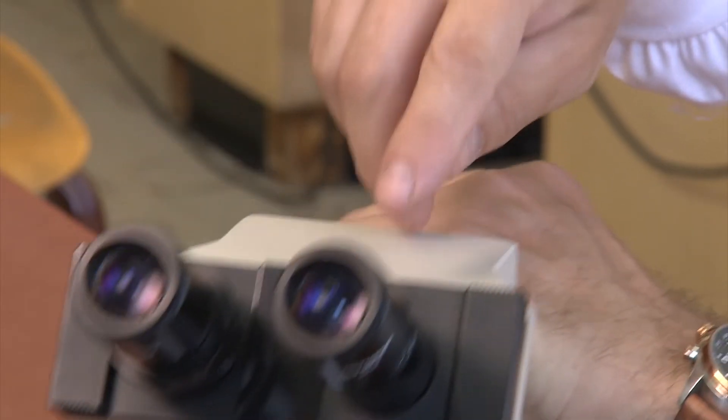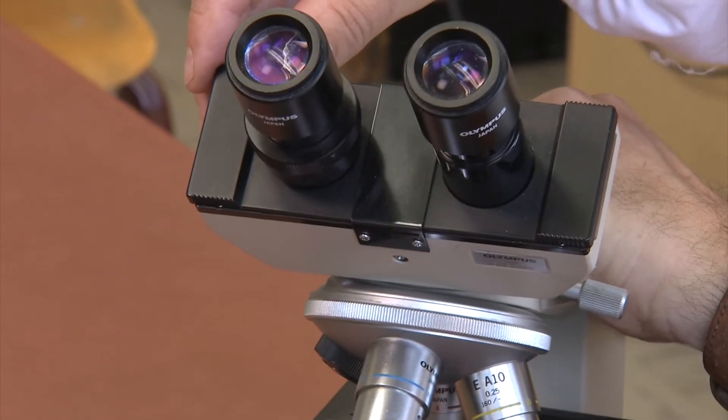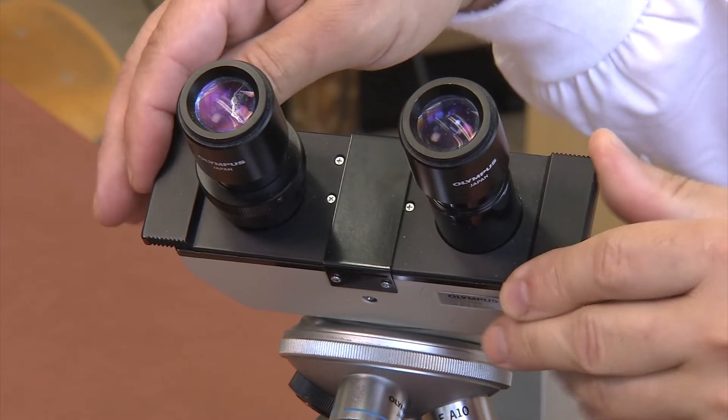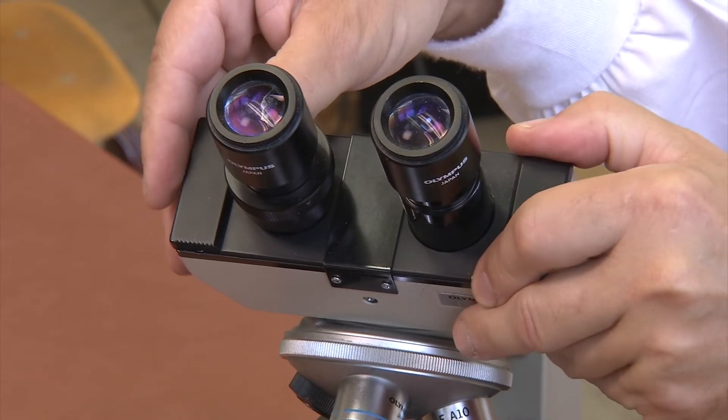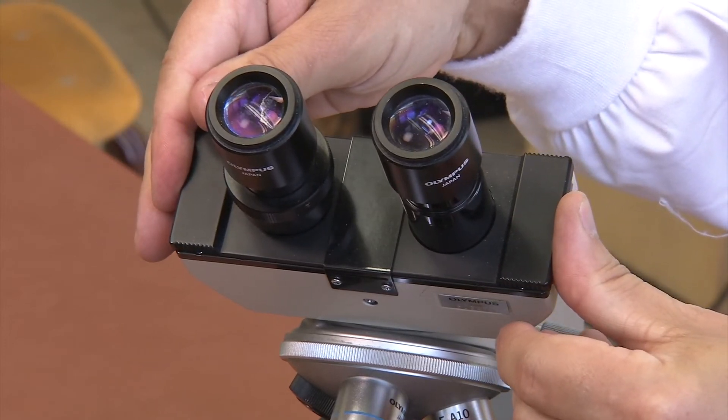Between the base of the oculars is the interpupillary distance scale. It resembles a ruler because it measures the distance between the oculars. The scale will help you consistently set the distance between your oculars every week. To change the distance, simply move the oculars together or apart.